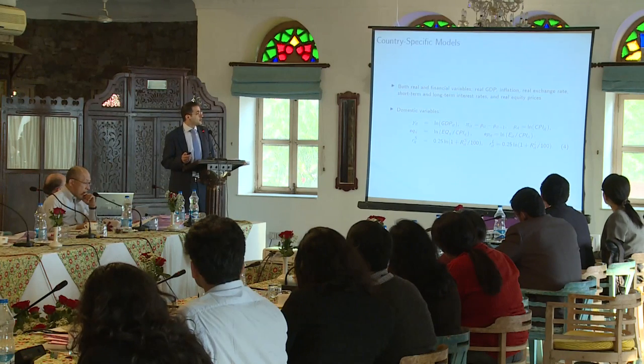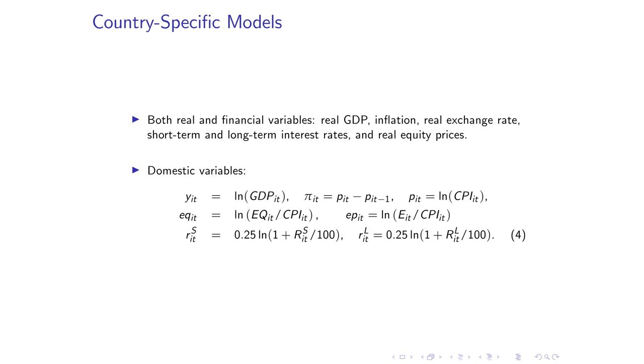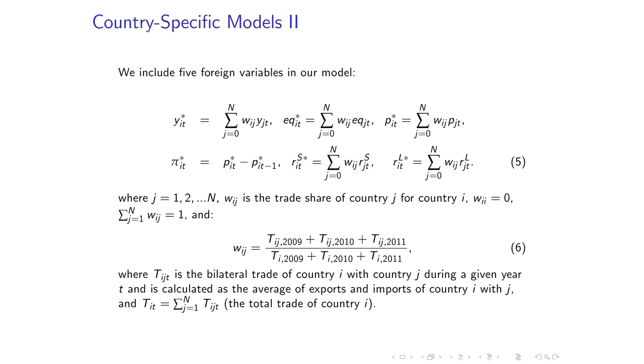We have six domestic variables. We use an equity index for each country. Not all countries have long-term bonds, so long-term returns aren't included for all. For every country, we include GDP, exchange rate, and inflation. For instance, for Saudi Arabia, interest rates are not very meaningful and there is no developed equity market going that far back, so we exclude those variables. The foreign star variables are weighted averages of trading partners, again averaged over three years.